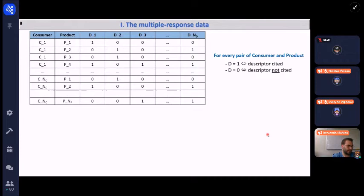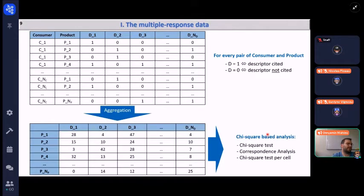Usually these data are summarized into a contingency table crossing products and descriptors which summarizes the number of times each descriptor was cited for each product at the panel level and then chi-square based analyses are usually performed such as chi-square tests, notably correspondence analysis and sometimes chi-square test per cell.